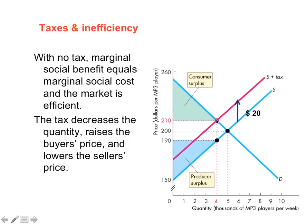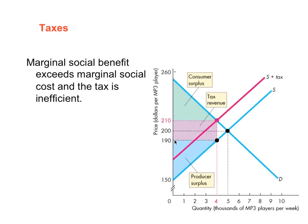At this output level, the cost of producing the good is $190. Producers receive $210 from the market but must pay $20 in tax to the government, so they are finally getting $190. The producer surplus is therefore the area above the supply function and below $190 — the amount producers are actually receiving after paying the tax.